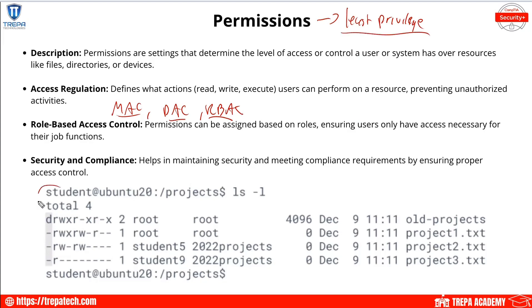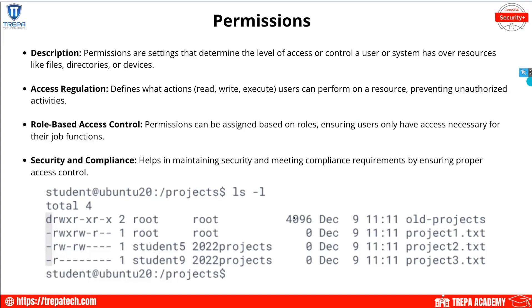On our Linux device, we can check permissions where for a file like project2.txt, the owner is student five, and we can see their permissions — read, write, read, write, and then no permissions for others. That's how we set things on Linux devices — and yes, that is definitely Linux; it says Ubuntu right there.